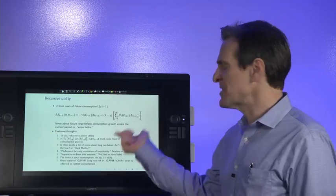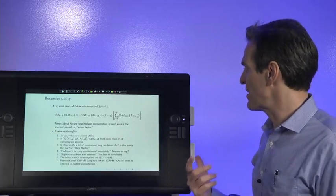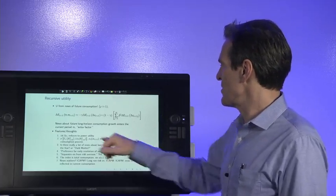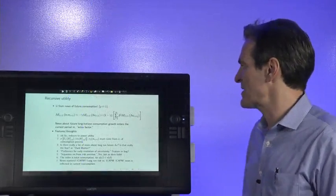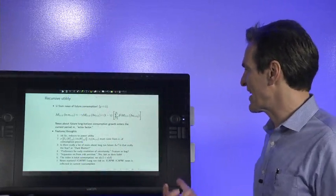So some features and some thoughts about this whole class of models. First, notice if consumption growth is IID, then this reduces to power utility. There are no changes in expectations of future consumption growth, not measured in today's consumption growth. It relies on dynamics past IID in consumption growth to get anything going.